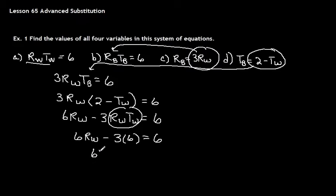So we get 6RW, this would be minus 18. If I add it to the other side, I get 24.